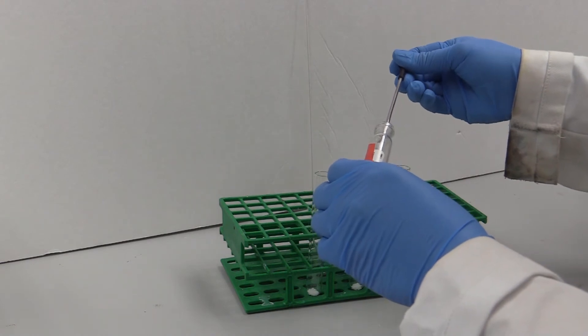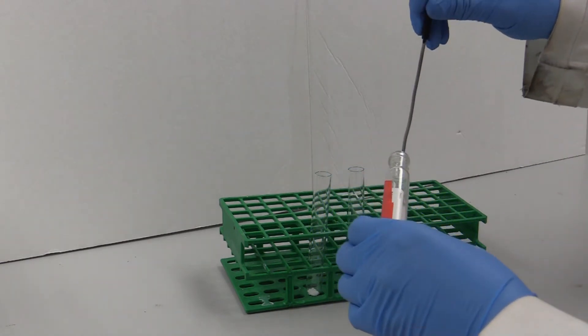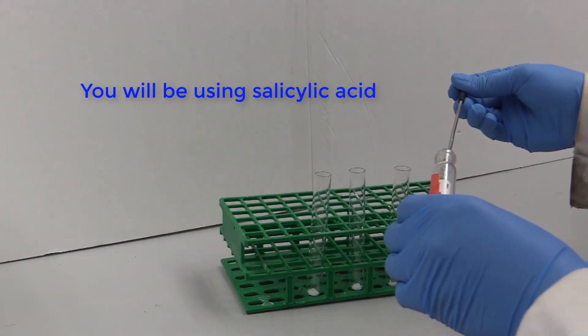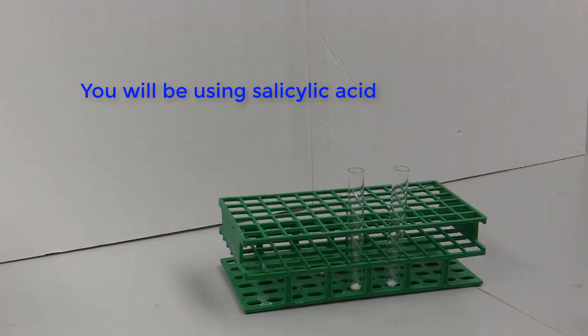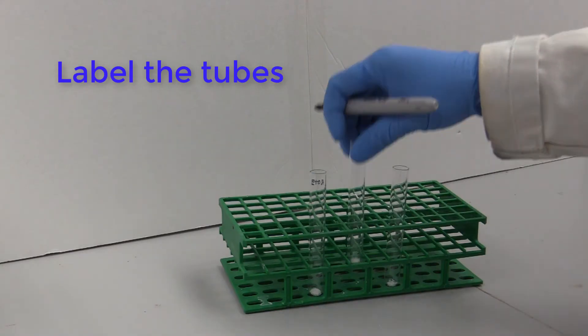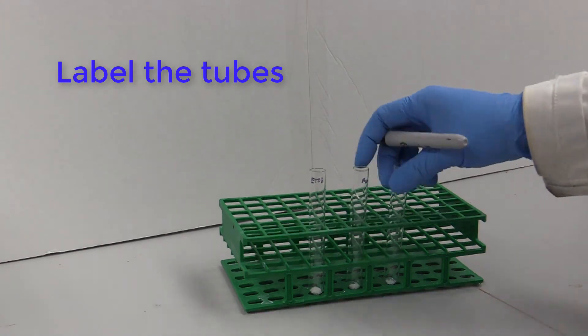When recrystallizing an unknown, add a very small amount of the unknown to a few different test tubes. Label the tubes with the solvent so they don't get mixed up later.